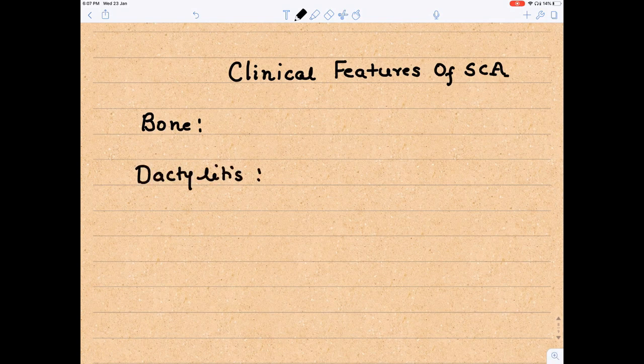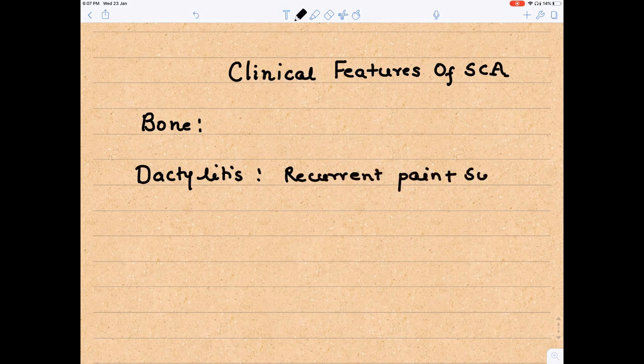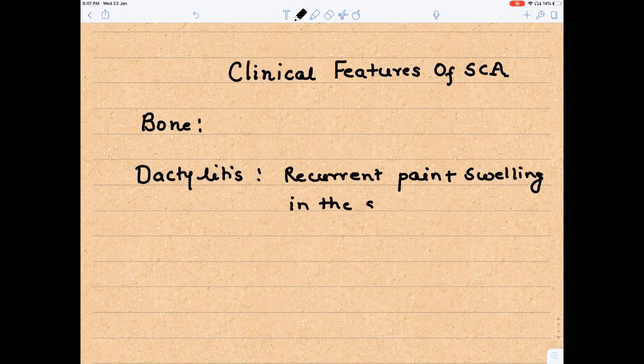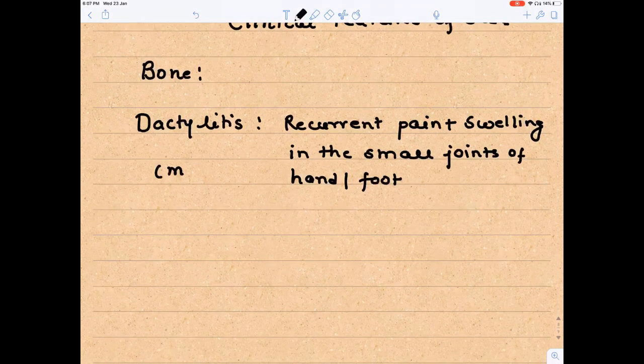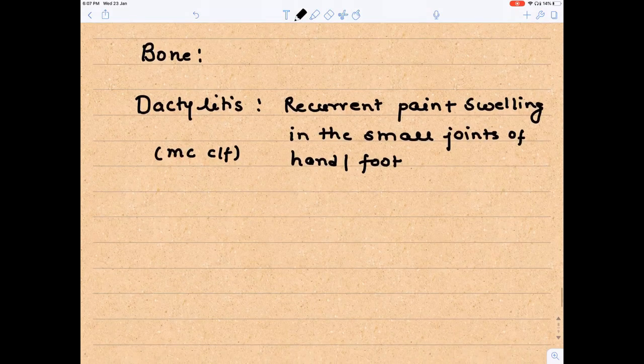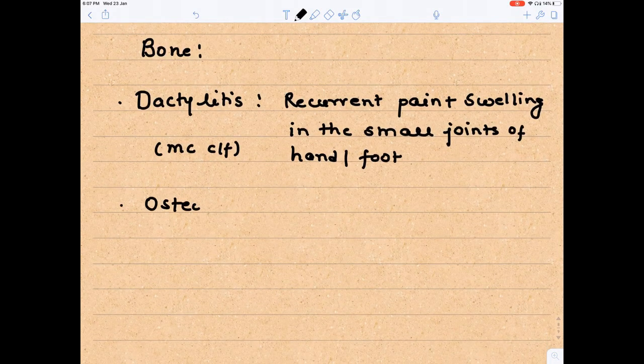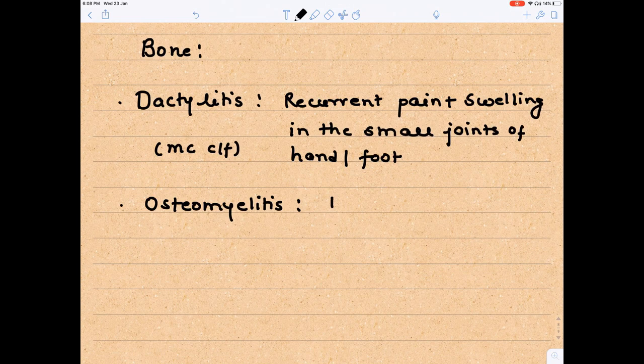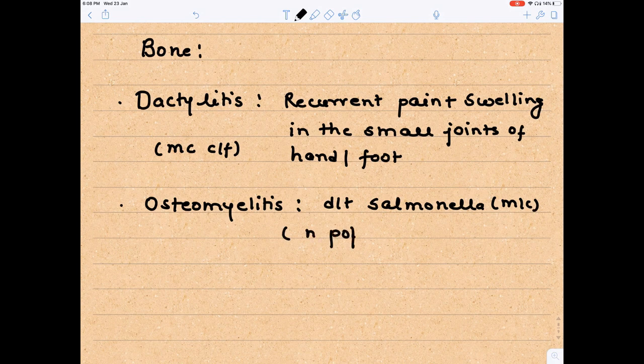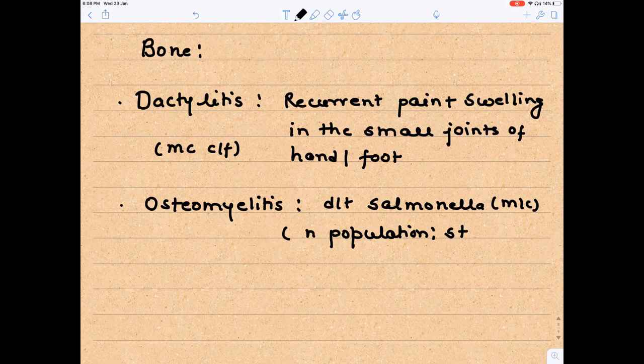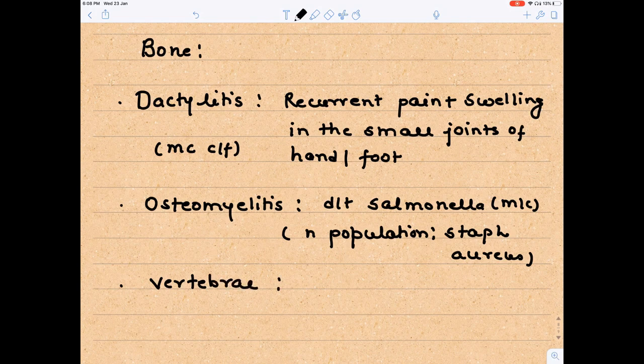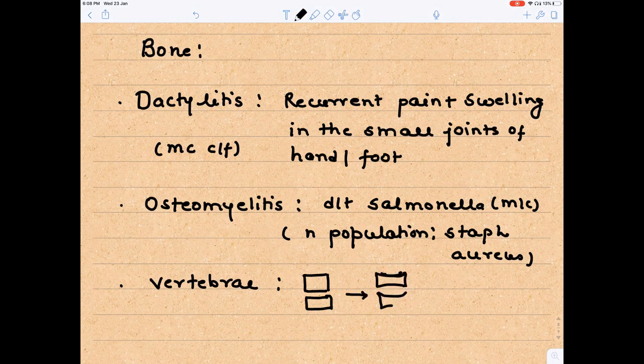Let's sum up clinical features of sickle cell anemia. First and foremost is bone involvement. Most common clinical feature is dactylitis, which is recurrent pain and swelling in the small joints of hands and foot. This is the most common clinical feature, must know for your entrance. Second is osteomyelitis, which is infection of the bone. Overall, most common cause of osteomyelitis is staph, but here in sickle cell anemia it is salmonella. In normal population it is staph aureus, but in sickle cell anemia it is salmonella, which is a gram-negative organism. You must remember antibiotic will be different here.